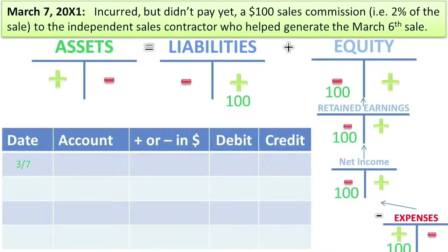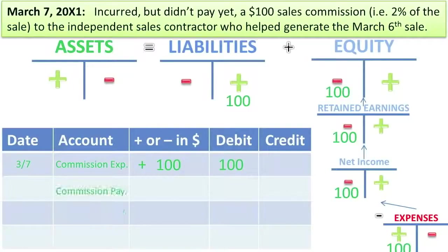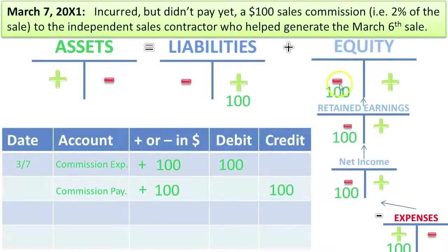Let's put it into journal entry form. We have commission expense that went up by $100. If an expense goes up, it's a debit entry. And commissions payable also increased by $100. Since it is a liability, that is a credit entry. You should see that assets were not affected by this entry, but liabilities went up by the same amount that equity went down, and that is why this remains in balance.